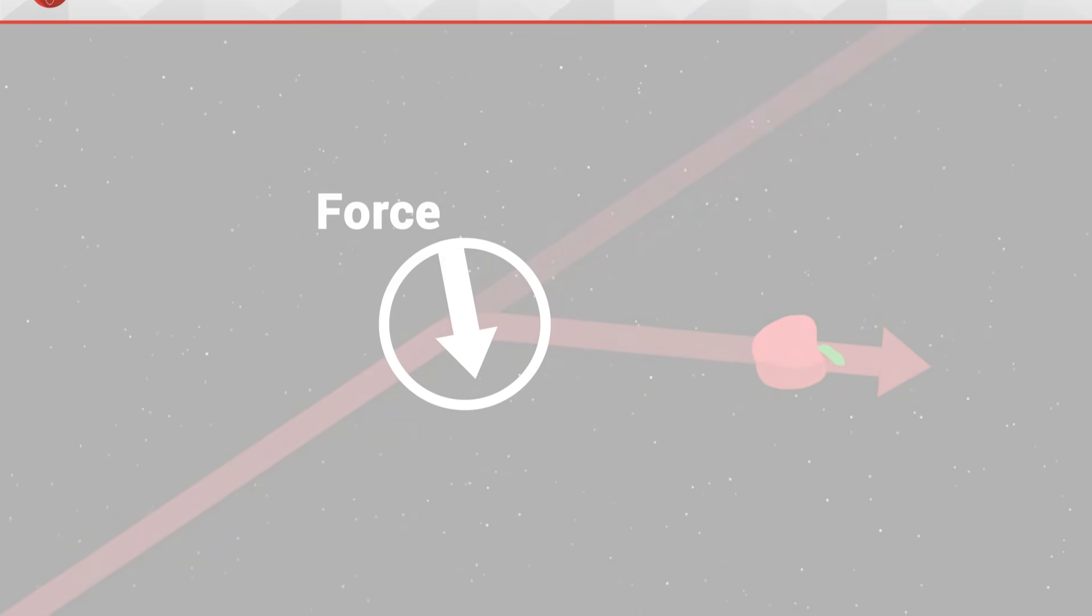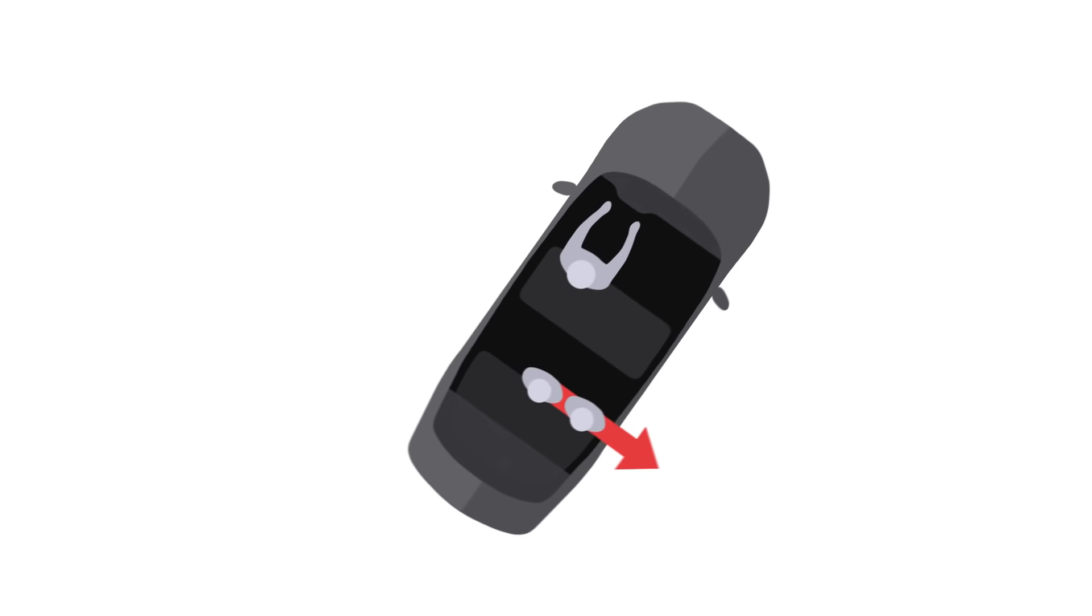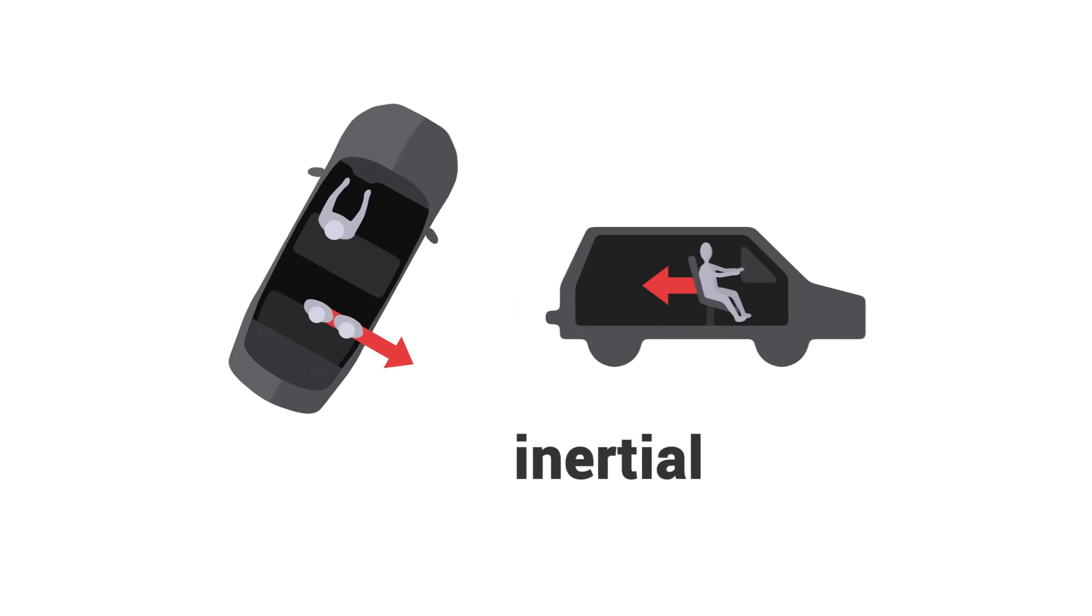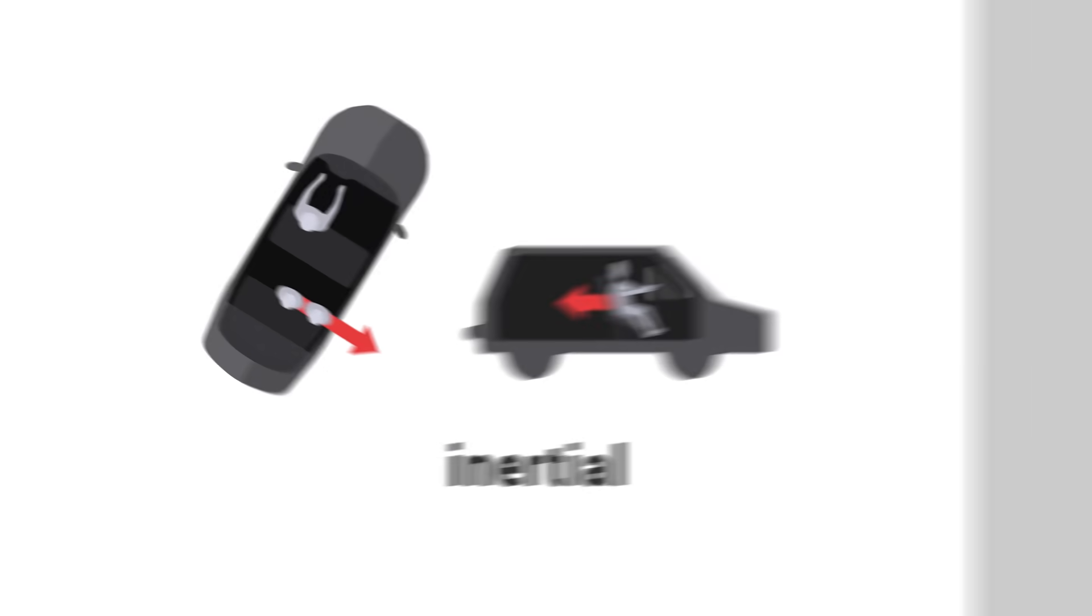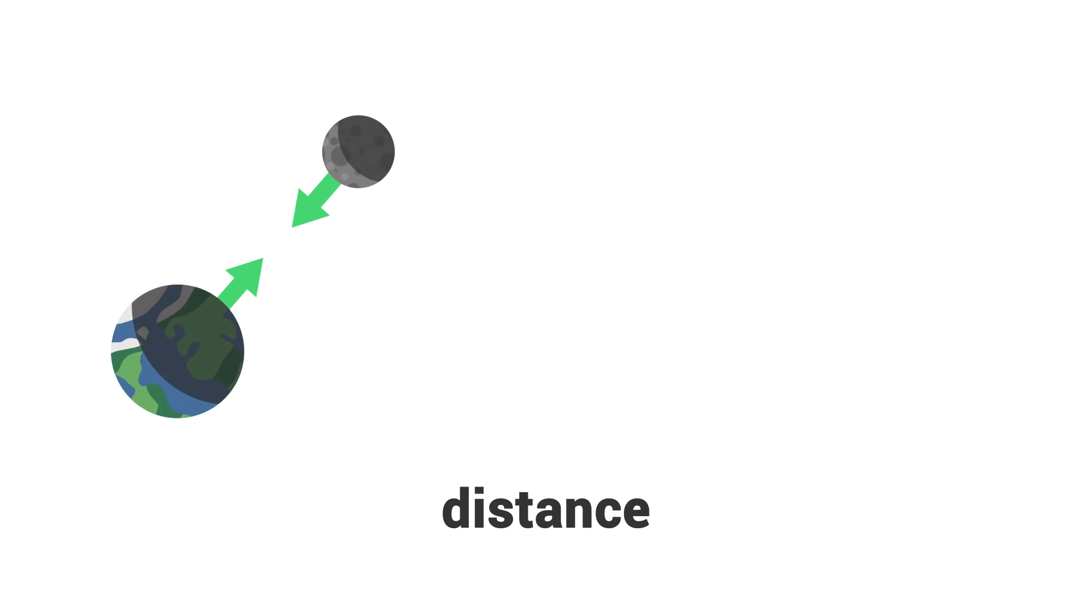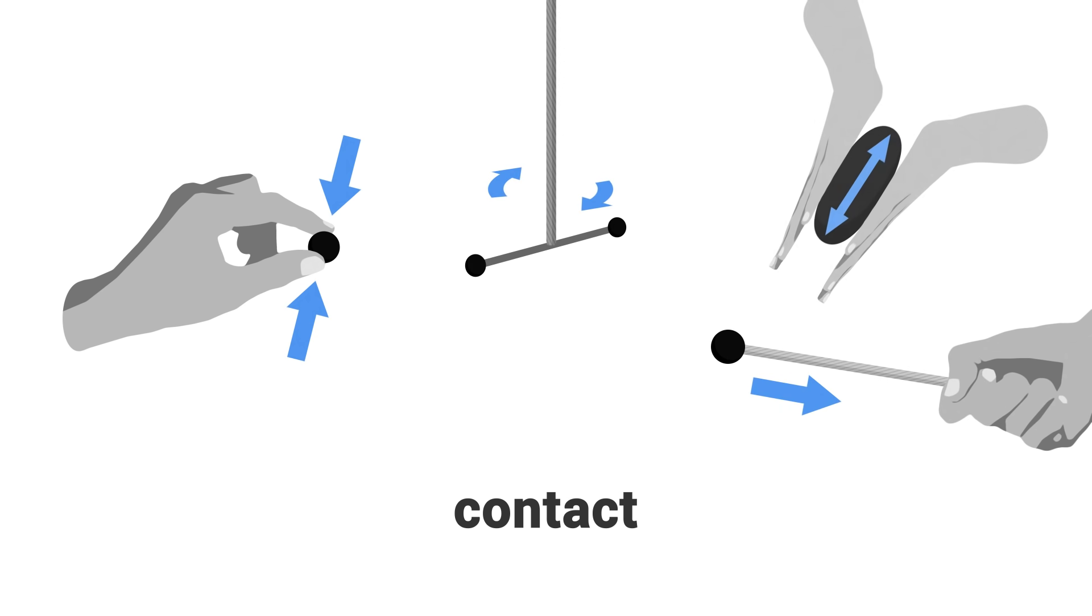At first glance, we can classify all forces in the universe into three categories. First, we can think of the force that pulls us back when a car accelerates, or the centrifugal force that pushes us to one side when it turns. These kinds of forces are called inertial forces. Secondly, we can think of forces that act at a distance. The two main ones being gravity, which attracts massive objects together, and electromagnetism, which attracts or repels charges and magnets. Finally, the third category groups all contact forces. These are the forces of pressure, traction, torsion, deformation, or even friction. All these forces have the property of acting locally, through physical contact between two objects.